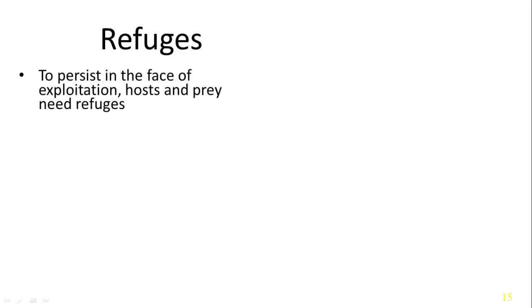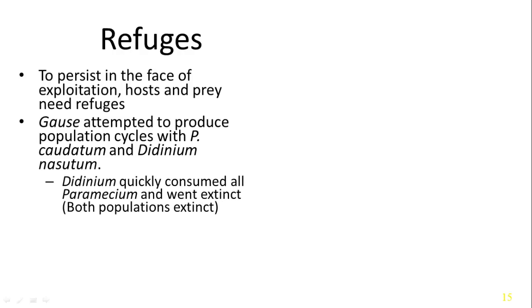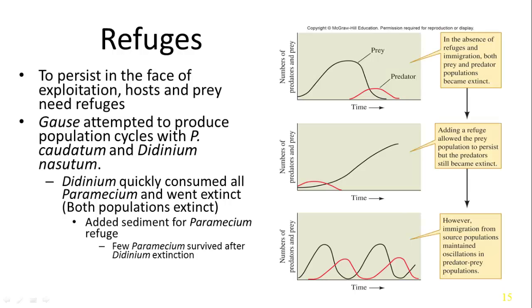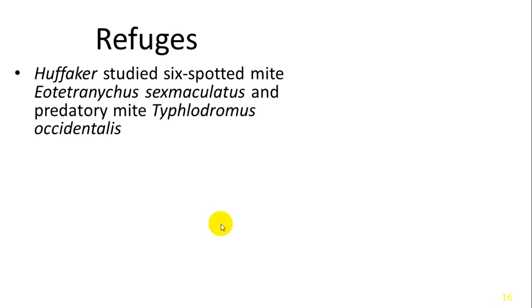To persist, both predator and prey need refuges to prevent overexploitation. Gause attempted to produce population cycles with P. caudatum and Didinium nasutum, but Didinium quickly consumed all the paramecium and both went extinct. When he added a refuge, a few paramecium survived after the Didinium went extinct. Huffaker studied six-spotted mite and predatory mite populations, separating them with oranges and rubber balls with partial barriers to mite dispersal.